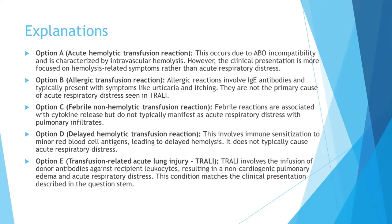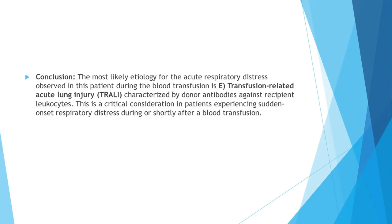Option A, acute hemolytic transfusion reaction, occurs due to ABO incompatibility and is characterized by intravascular hemolysis. Option B, allergic reaction, involves IgE antibodies and presents with urticaria and itching. Option C, febrile non-hemolytic reaction, is associated with cytokine release but does not typically cause acute respiratory distress. Option D, delayed hemolytic reaction, involves immune sensitization to minor antigens causing delayed hemolysis. Option E, transfusion-related acute lung injury (TRALI), involves donor antibodies against recipient leukocytes, causing non-cardiogenic pulmonary edema and acute respiratory distress — this matches the clinical presentation, making TRALI the correct answer.